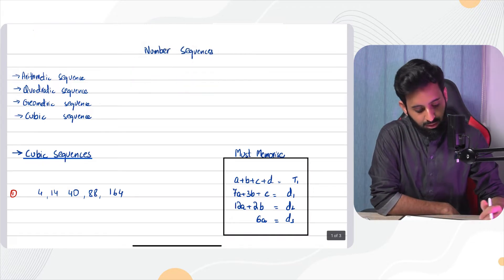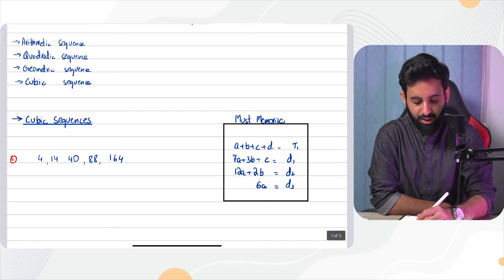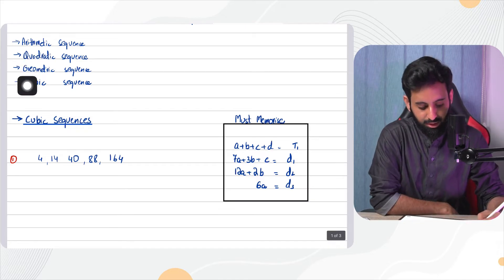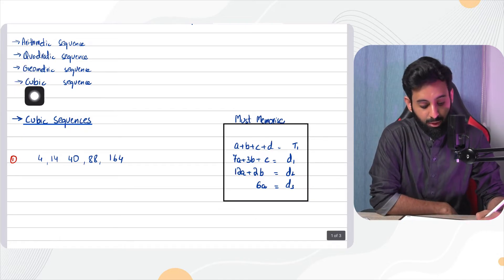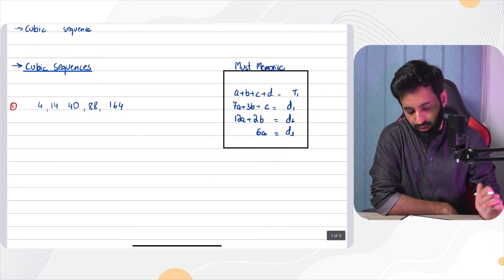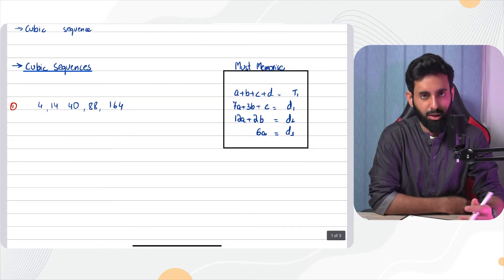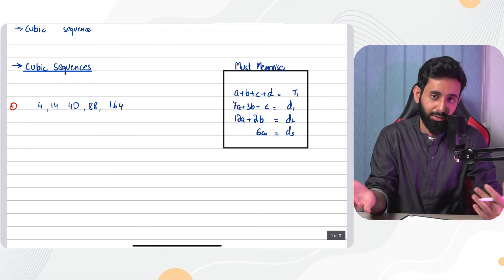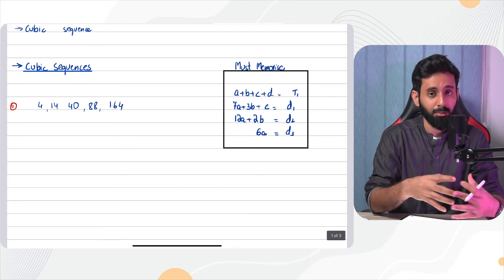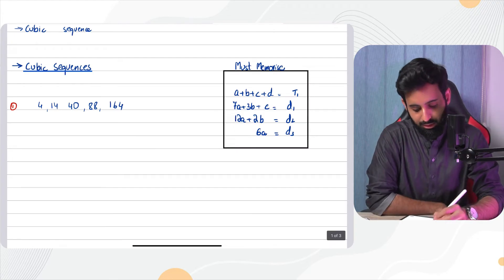The first three sequences — arithmetic, quadratic, and geometric — I've already covered in a live stream. In this video I'm specifically covering cubic sequences. First of all, how do you identify that a sequence is cubic? Once you've identified it as cubic, only then will you be able to find the general term.